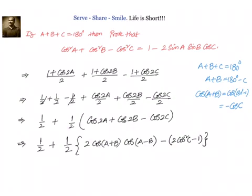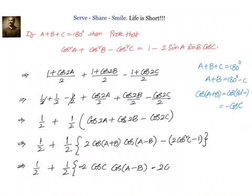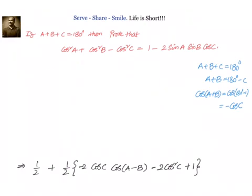With that we can come back and write that equal to half plus half into: we know cos A plus B is now minus cos C. So when we open the bracket, we have minus 2 cos square C plus 1. In the next step, let us simplify what we have inside the bracket. That will be 1 by 2 plus 1 by 2 into 1, that will be 1 by 2. Then we have 1 by 2 into minus 2, so that I can write it as minus cos C into cos A minus B.